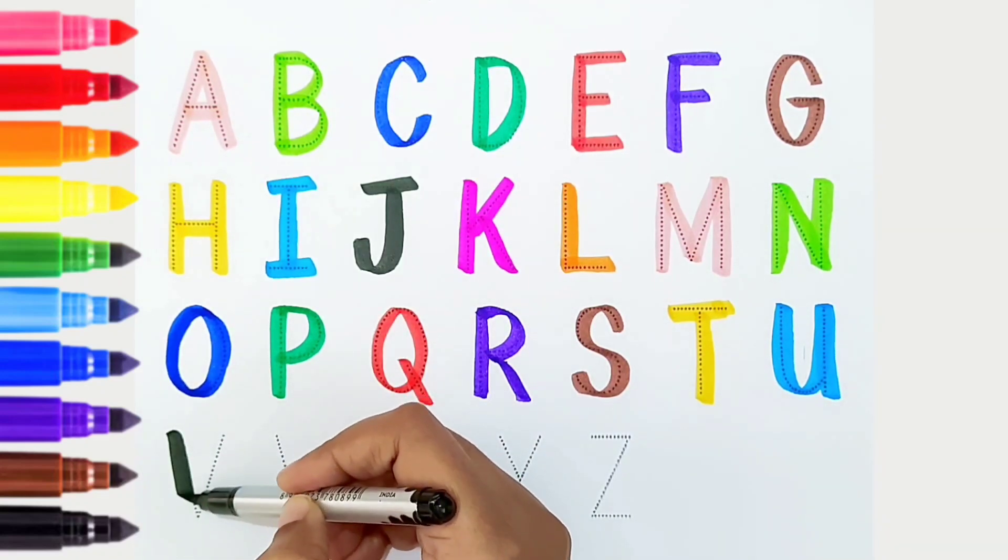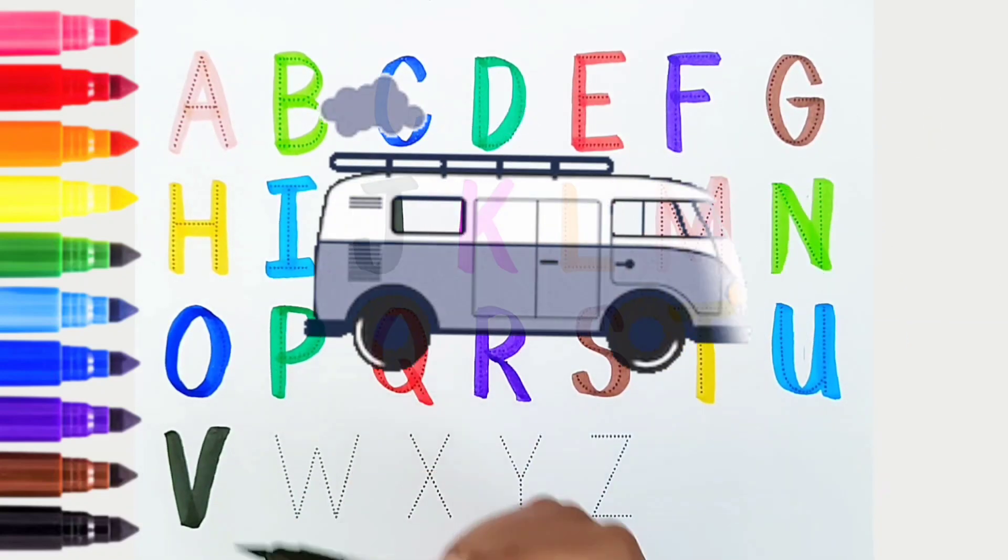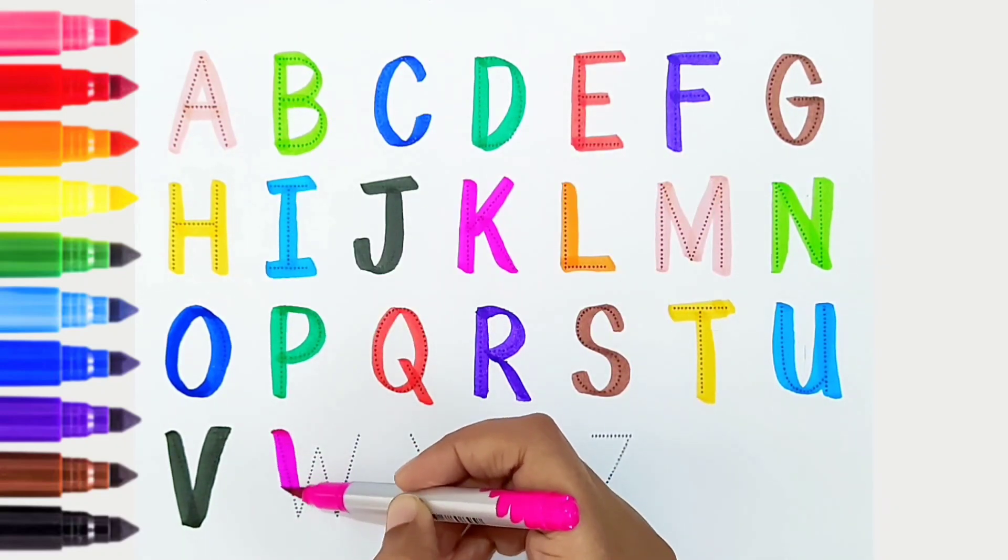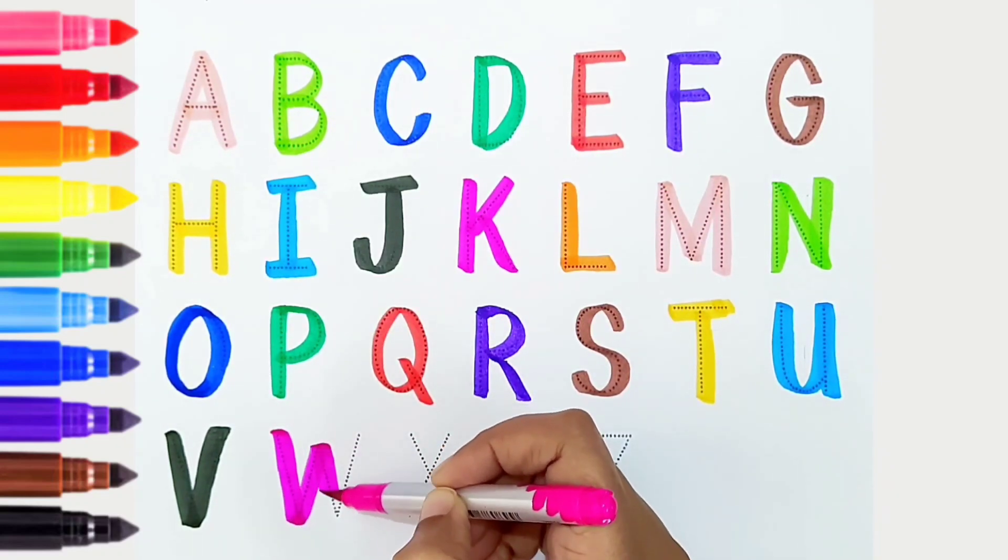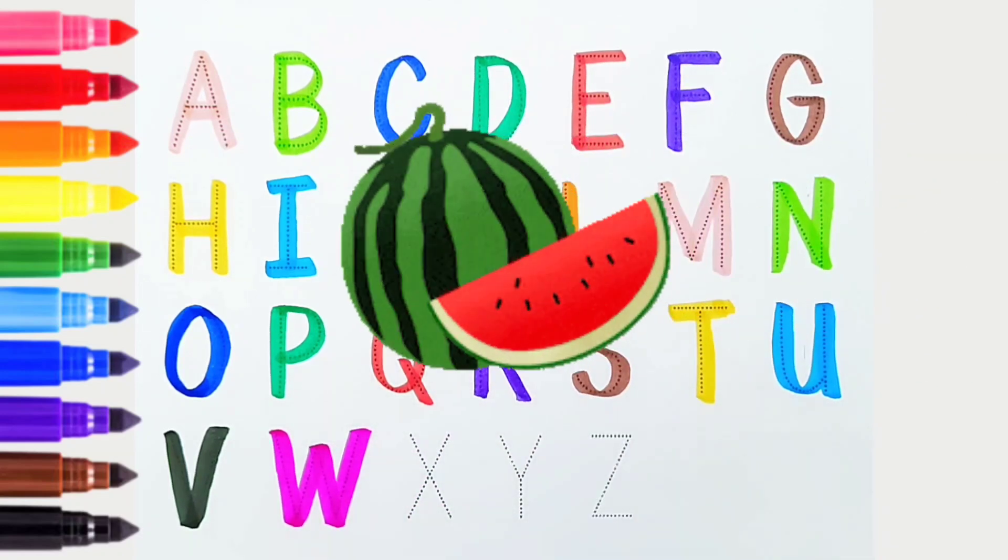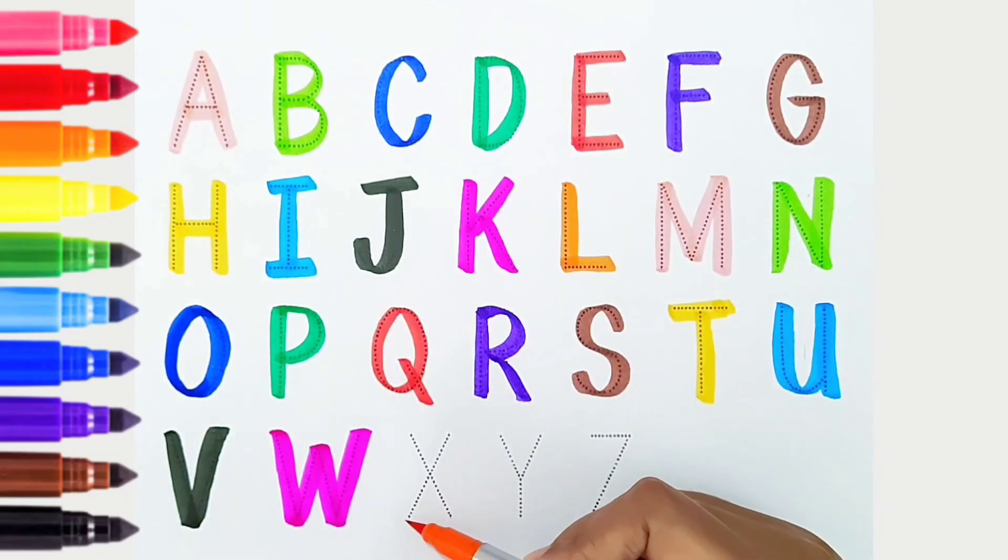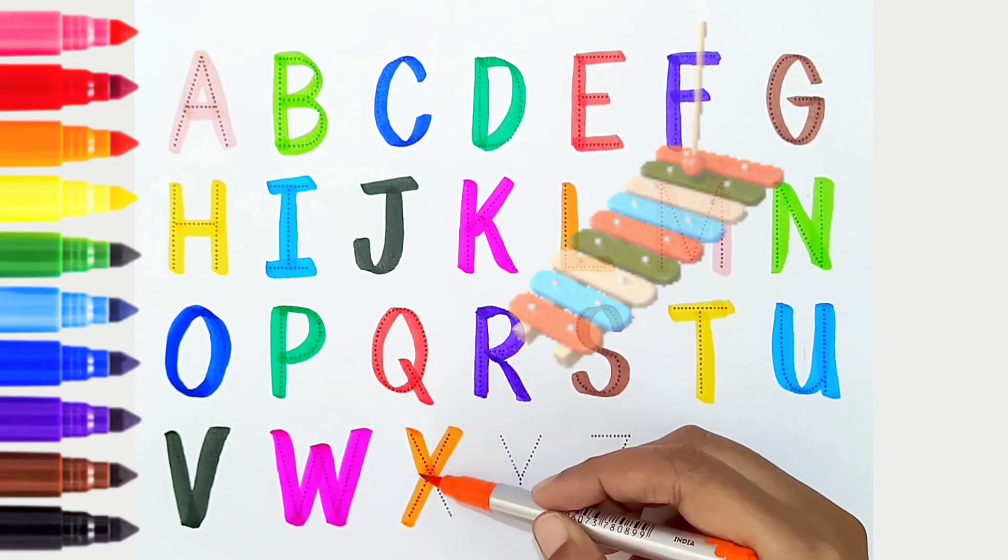V, black color, V is for van. W, dark pink color, W is for watermelon. X, orange color, X is for xylophone.